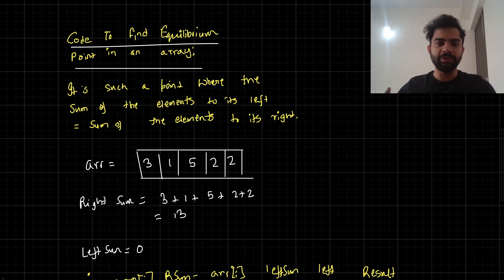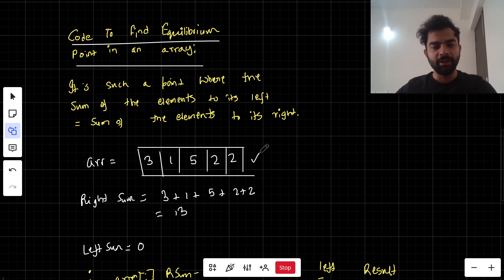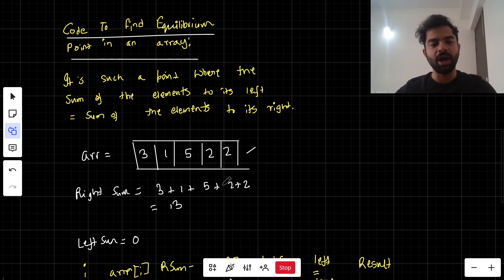For example, we are taking an array as 3, 1, 5, 2, 2. These are the elements of the array.